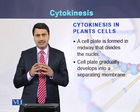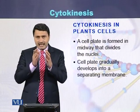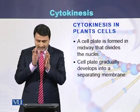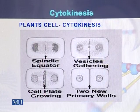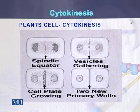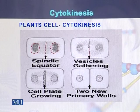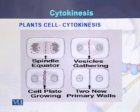Cytokinesis in plant cells: in the case of plant cells, a plate is formed in the middle of the cell. In this diagram we can see how a single plant cell is converted into two cells. Chromosomes are at the poles in the form of nuclei. There are two nuclei, and in the middle there is a spindle equator where small vesicles begin to form. These vesicles grow, and ultimately after their growth one cell is converted into two cells.